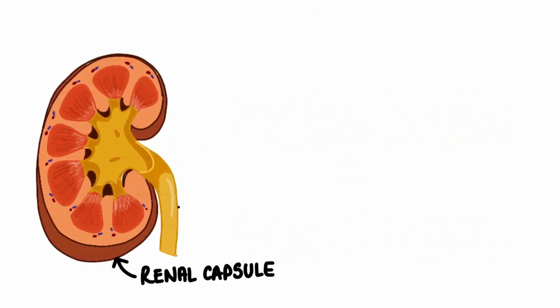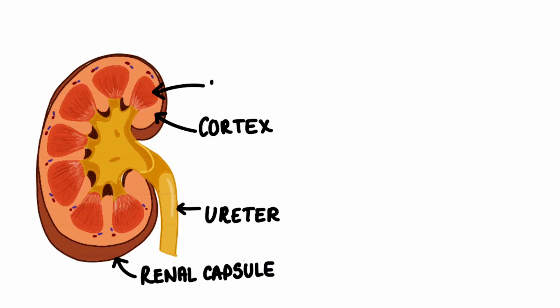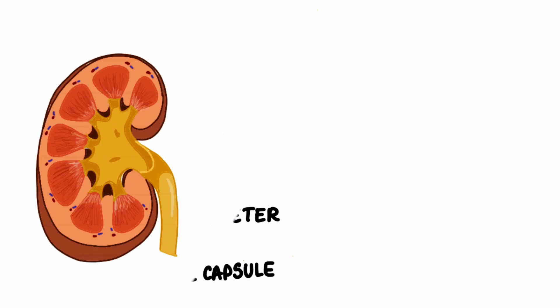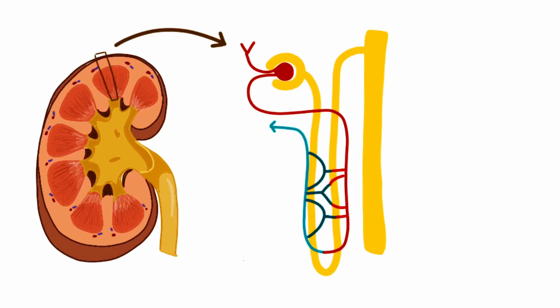Both of these clinical manifestations sound very similar and affect the kidney, so in this video we'll be looking at how to distinguish between the two. Our kidneys help in filtering the blood and are made up of many tubes known as nephrons. Many of the larger components of the blood are filtered at a specific part of the nephron known as the renal corpuscle.